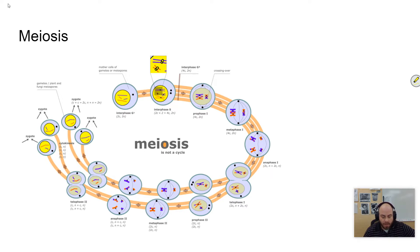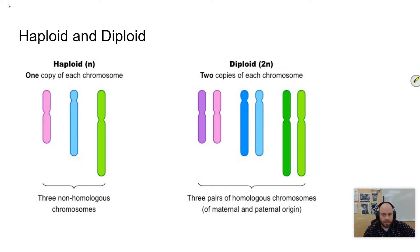So a couple of words you need to know: diploid and haploid. Diploid is where you have two copies of each chromosome — you get one from mom and one from dad. In humans, for instance, we have 46 chromosomes in our body cells, or somatic cells. You'll hear both of those terms used.